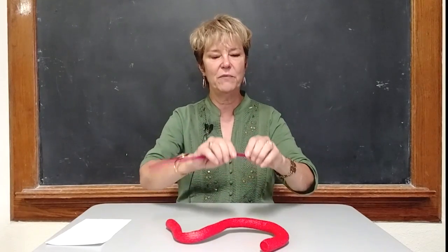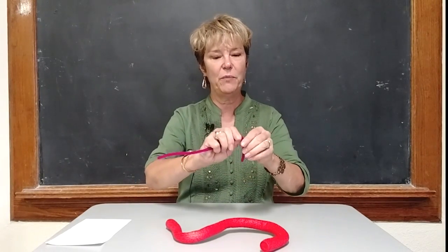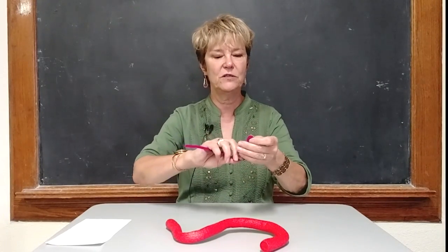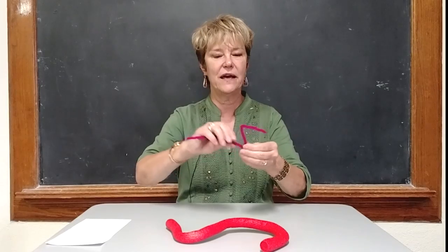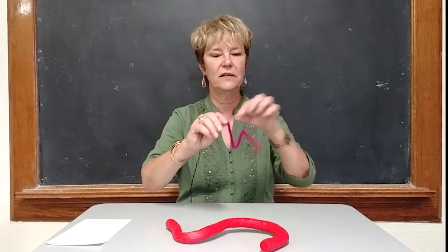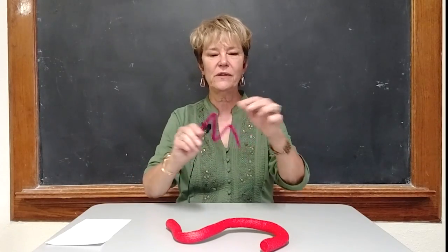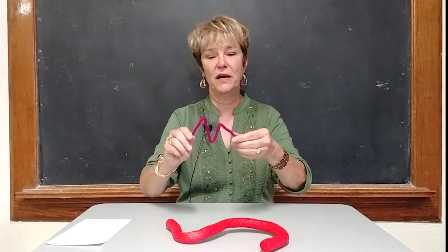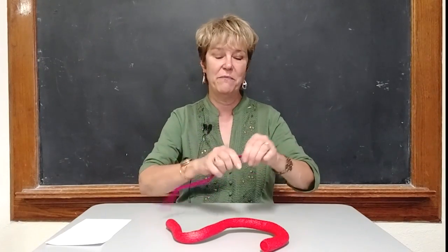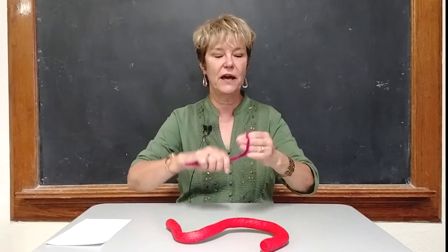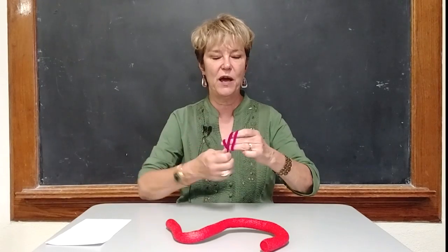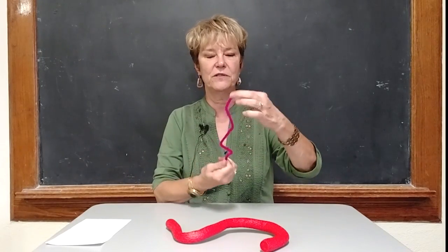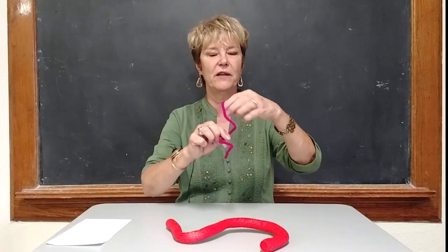And then they could make — this is a pipe cleaner — they could just make a zigzag line. And sometimes they might make a spiral line, which they just wrap around their fingers and make a spiral line.